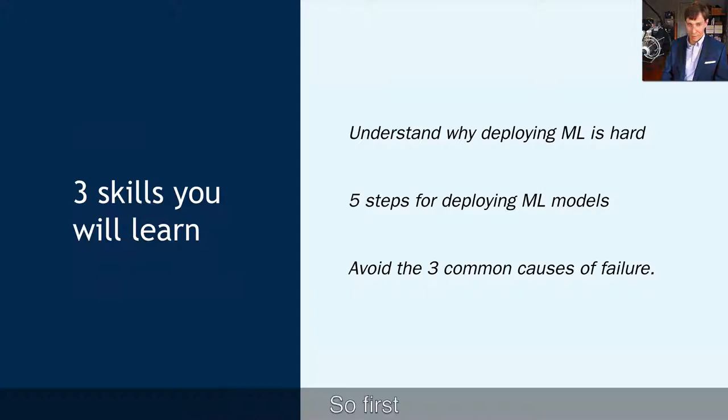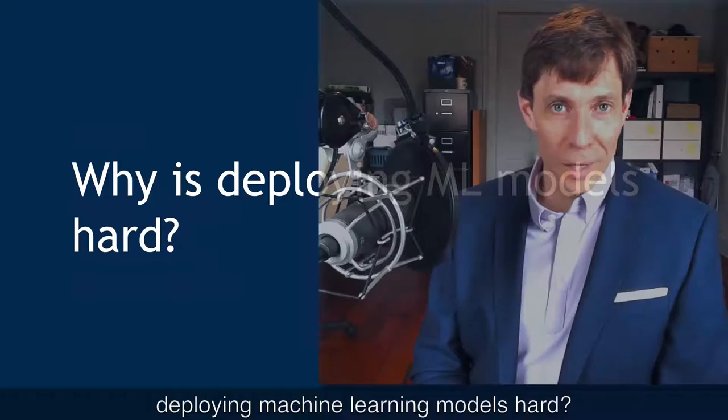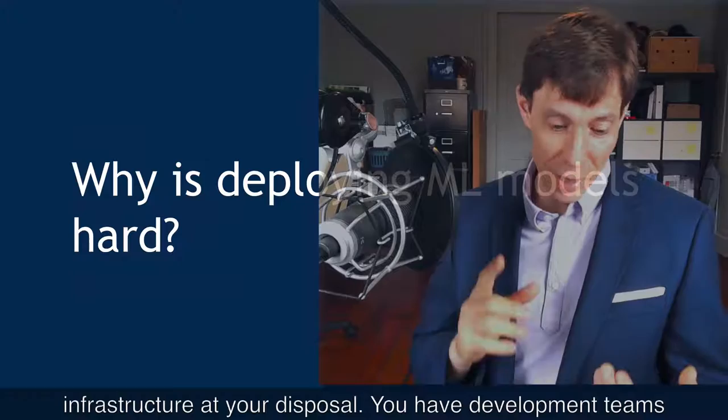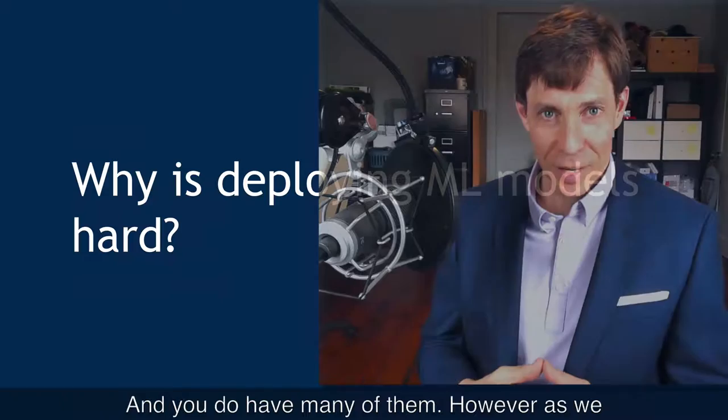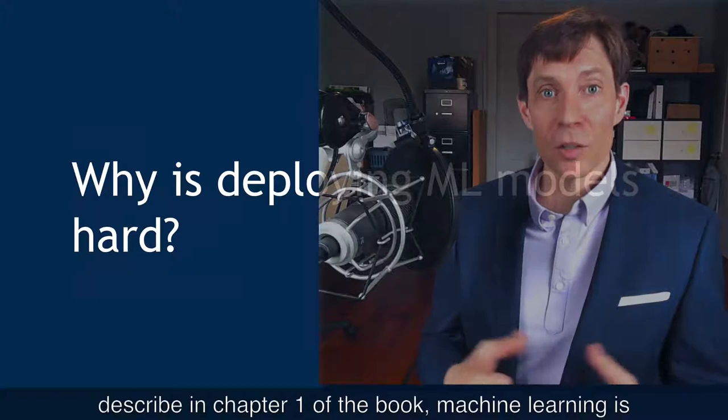So first, why is deploying machine learning models hard? On the face of it, it shouldn't be — you already have tons of infrastructure at your disposal: development teams, servers, databases, software, a development process, and applications. It seems like you already have all the building blocks necessary. However, as we described in chapter one of the book, machine learning is a different way of building software. And as a result, there's a new type of role and a new type of process on your software development team.